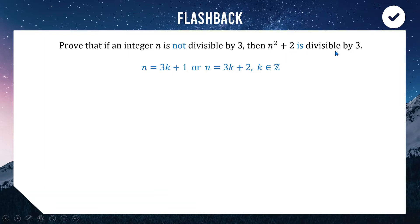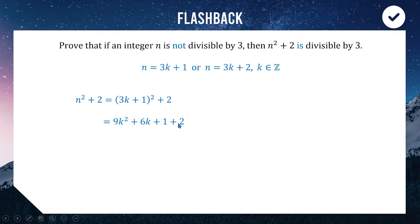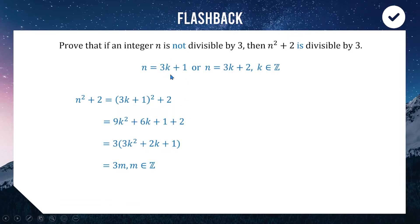Let's start off with the first case. We'll take n = 3k + 1, square it, and then add two. Expanding out this bracket we get 9k² + 6k + 1, and then the one and the two go together to make three. So we have three as a common factor of all three terms — we can factor it out the front and we have three times (3k² + 2k + 1). So we have three times something, meaning we are divisible by three. The first condition is met for case one.